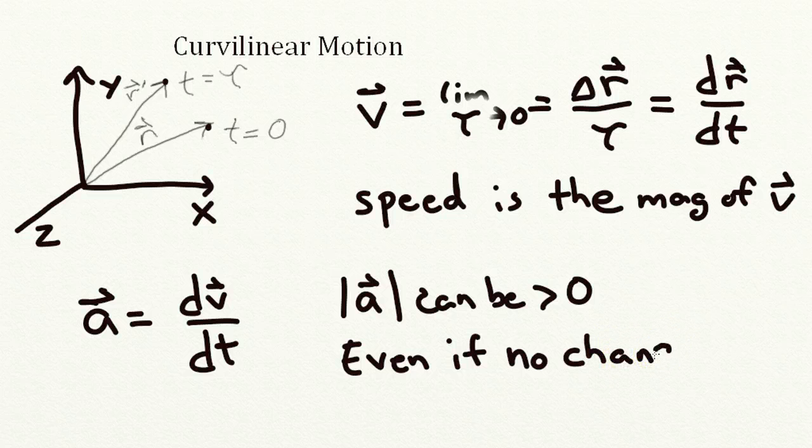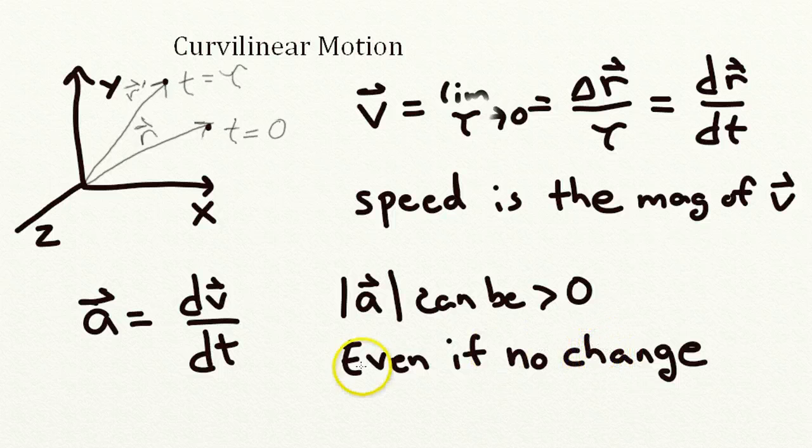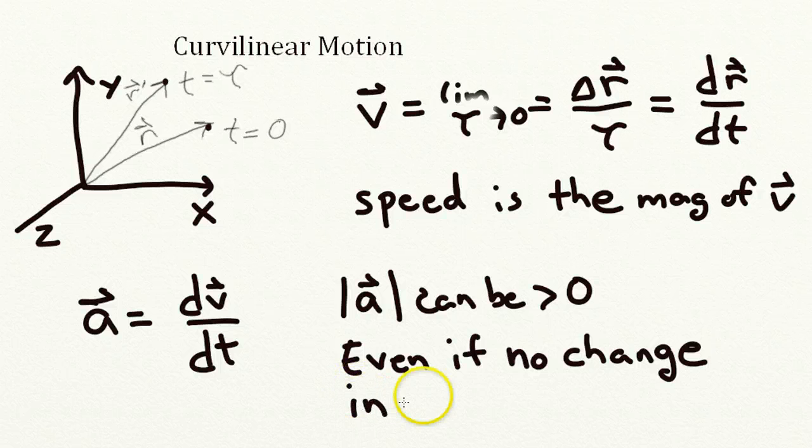So you could be moving at a constant speed but still have a non-zero acceleration. How would that work?